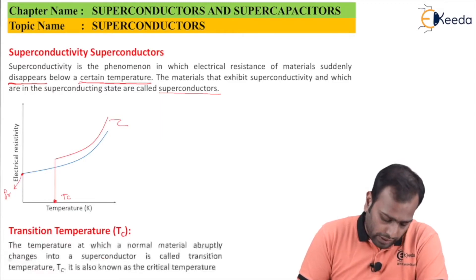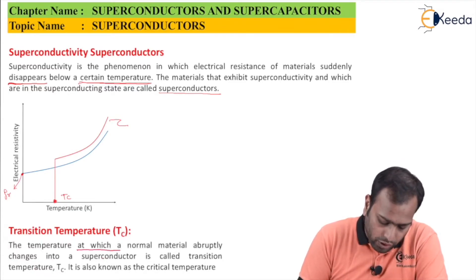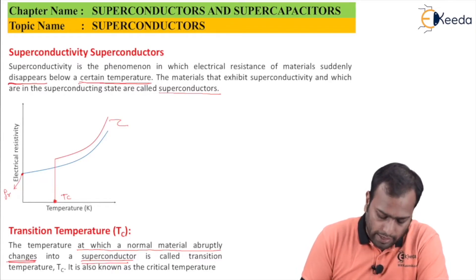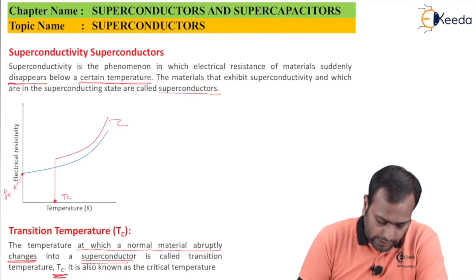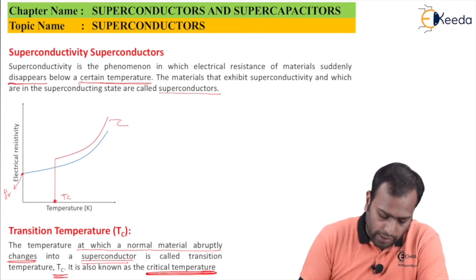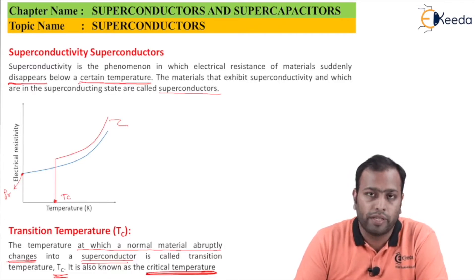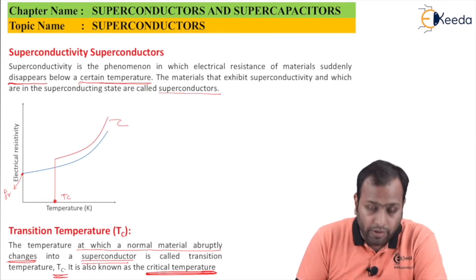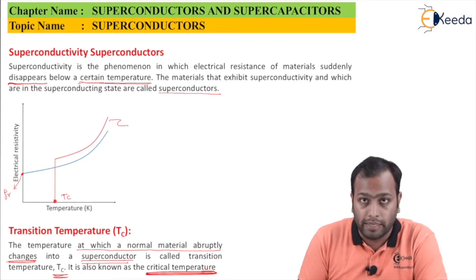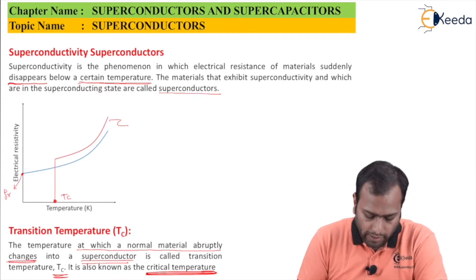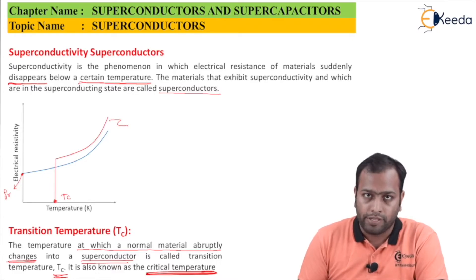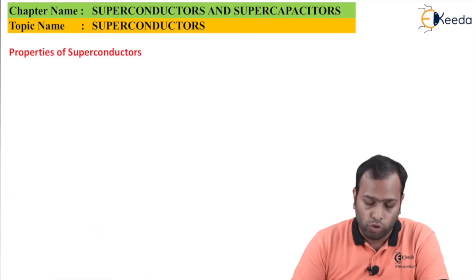This temperature Tc is called the transition temperature — the temperature at which a normal material abruptly changes into a superconductor. The transition temperature Tc is also known as the critical temperature. Both terms refer to the same point at which this abrupt change into the superconducting state occurs.